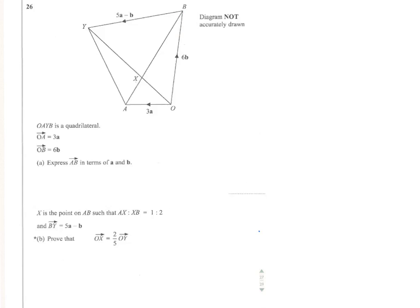We're asked to express AB in terms of vector a and vector b. So if I'm going from A to B with the vectors, then I'm going to go A to O and O up to B. I'm going against the arrow, so that'll be minus 3a plus 6b. So the first answer, very simple, minus 3a plus 6b.